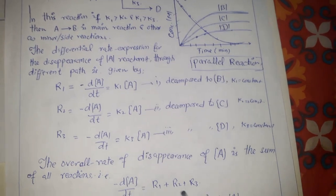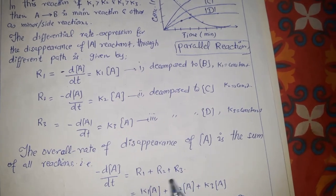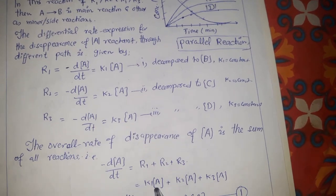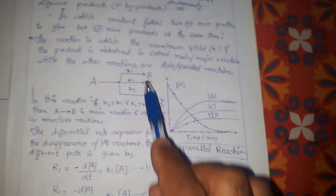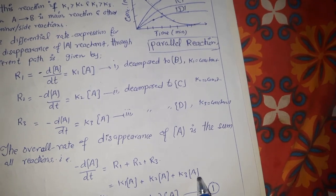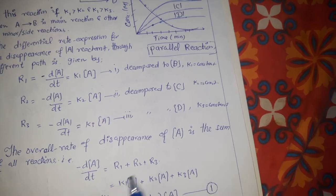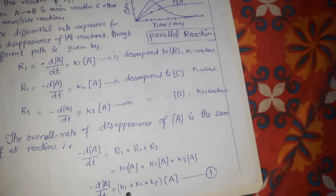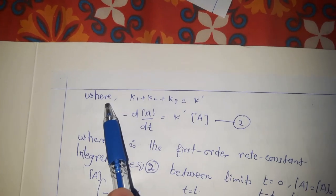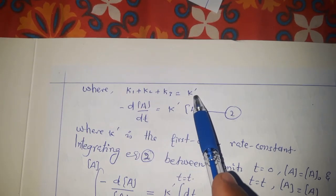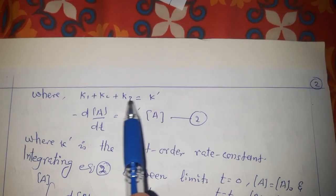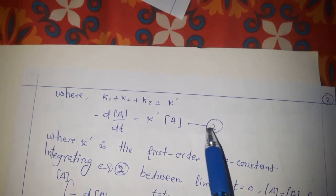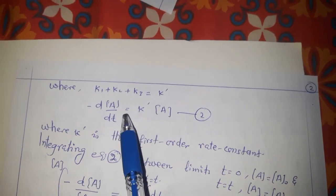The overall rate of disappearance of A is the sum of all these rates. To calculate the overall rate, we add R1 + R2 + R3, putting in the values K1·[A] + K2·[A] + K3·[A], then taking [A] common and summing all rate constants as K1 + K2 + K3. This sum K1 + K2 + K3 can be represented by a general rate constant K-bar, giving us equation 2, which is actually a first-order expression.